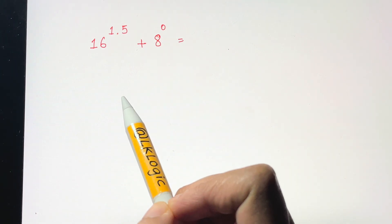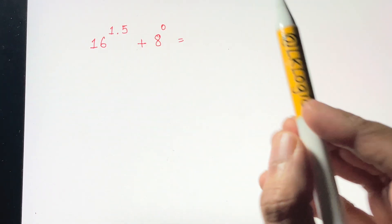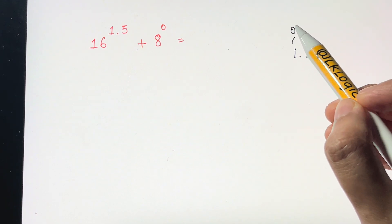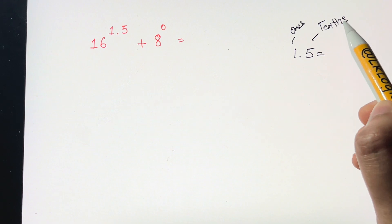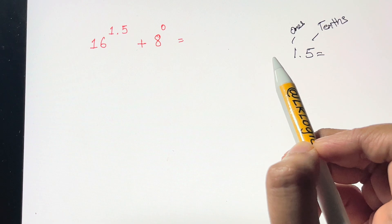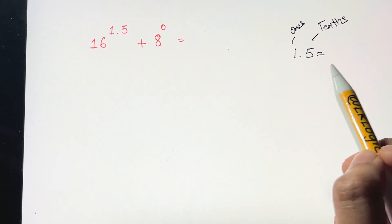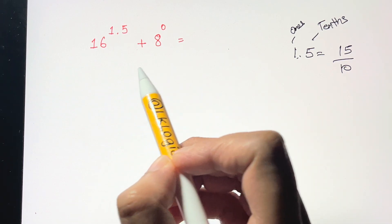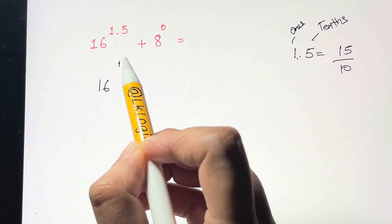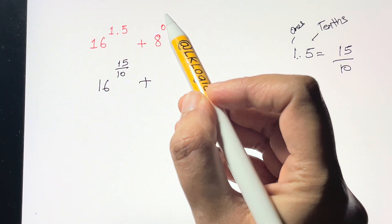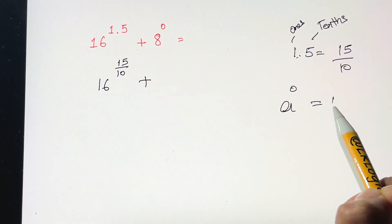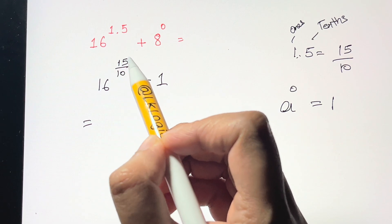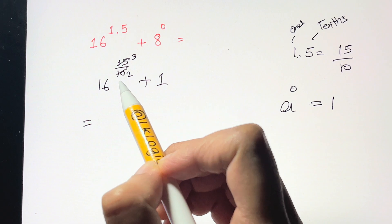Next question: 16 to the power of 1.5 plus 8 to the power of 0. The decimal 1.5 can be written as a fraction — on the right of the decimal point, digits are divided by multiples of 10, so 1.5 equals 15 tenths. Also remember, anything to the power of 0 is always equal to 1, so 8 to the power of 0 is 1. Simplifying 15/10: 5 times 3 is 15 and 5 times 2 is 10, giving 3/2.